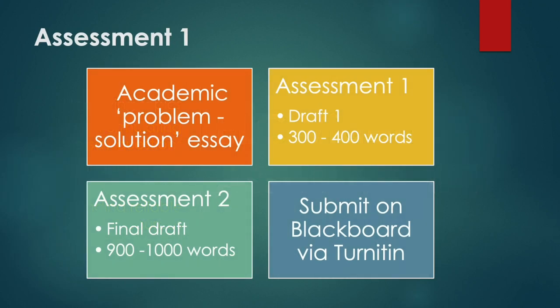Some reminders. Assessment 1 is a problem-solution essay. For draft 1, you have to write between 300 and 400 words, while for the final draft, Assessment 2, you have to write around 900 to 1000 words. Please check Blackboard for the due date or ask your teacher. Remember, you need to submit the assessments on Blackboard via Turnitin.